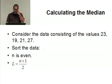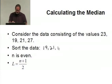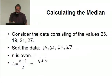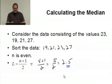Now consider the values 23, 19, 21, and 27. Now I have 4. Again, I want to sort the data. Sorted, I'll have 19, 21, 23, and 27. Notice N is even here. The location is still going to be N equals 4 plus 1 divided by 2. That's 5 divided by 2, which is 2.5. This point 5 is telling you it's in between the second and third value, here in between 21 and 23.